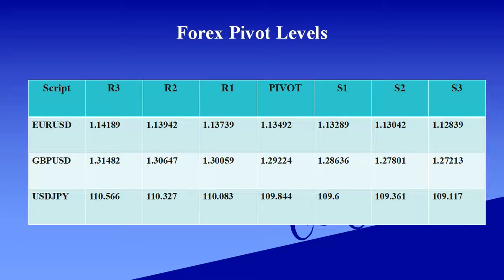EUR/USD pivot level is 1.134. Support level ranges: 1.132 and 1.128. Resistance level ranges: 1.134, 1.141, and 1.142. GBP/USD pivot level is 1.292. Support level ranges: 1.286 and 1.272. Resistance level ranges: 1.300 and 1.314.